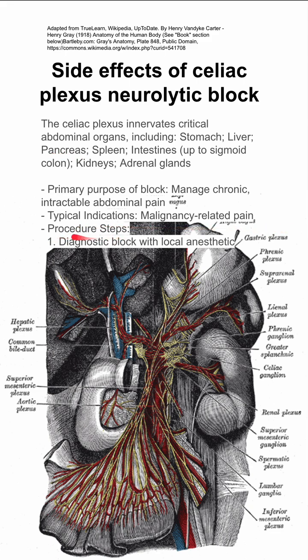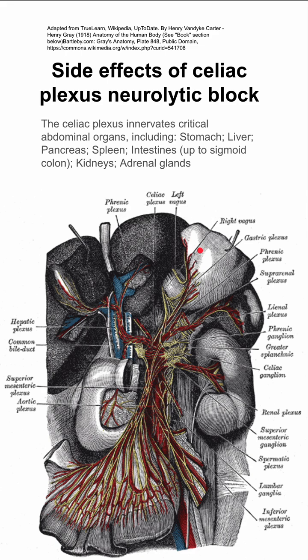Brief overview of the procedure. Your first step is to diagnose the actual block and its effectiveness with a local anesthetic, so you'll go in and apply local anesthetic around the celiac plexus, which is shown in the background here.